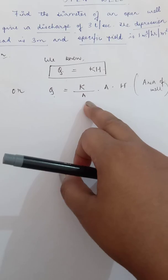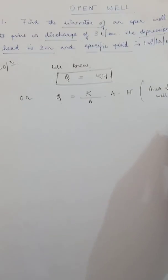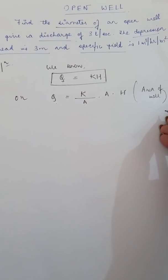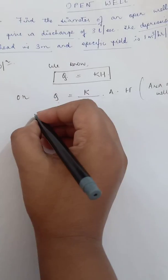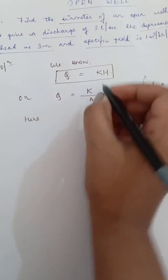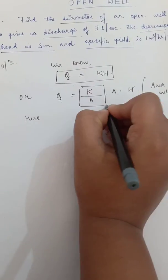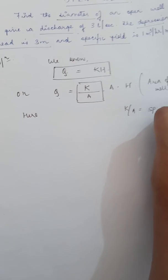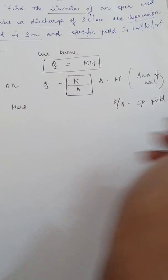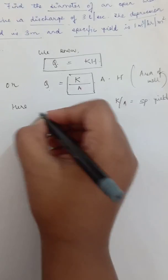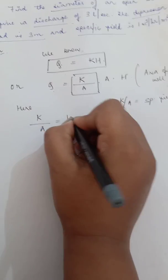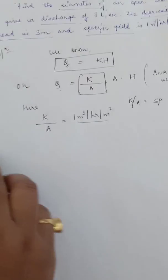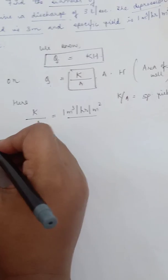We are bringing the term A in here just because we are asked to find out the diameter — since for the diameter formula we need area. As given in the lecture notes, the term k divided by A is known as the specific yield. So here k/A equals one meter cube per hour per meter square, which is the unit of specific yield.